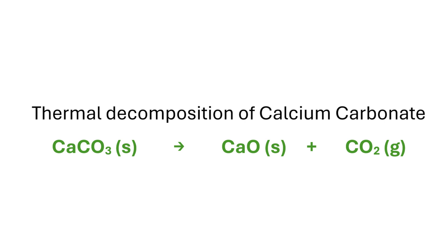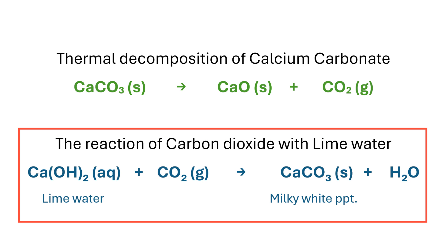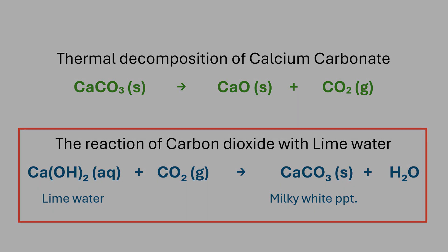Carbon dioxide reacts with calcium hydroxide solution to form an insoluble precipitate of calcium carbonate. This white precipitate gets suspended in the clear lime water and makes it cloudy or milky, as is commonly referred to. The reaction of carbon dioxide with calcium hydroxide is as shown here. The white residue left behind in the first test tube is no longer calcium carbonate but rather calcium oxide.